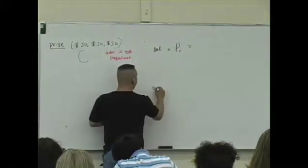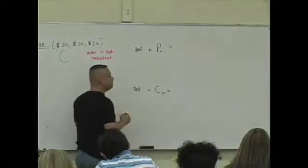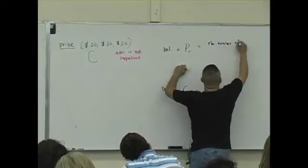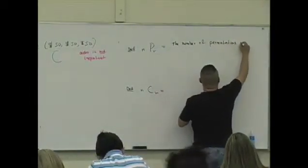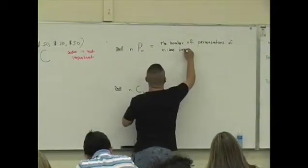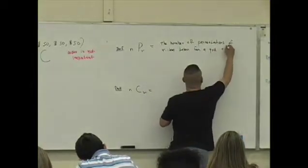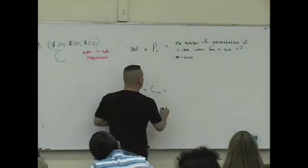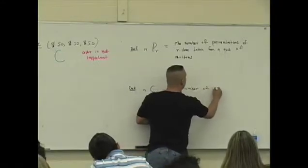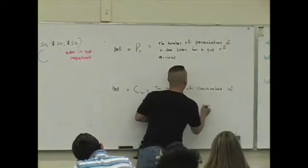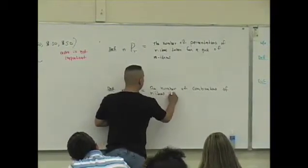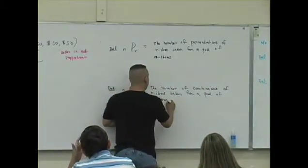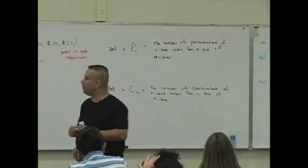Definition of nPr and definition of nCr. nPr is defined to be the number of permutations of r items taken from a pool of n items. Okay? nCr is the number of combinations of r items taken from a pool of n items.